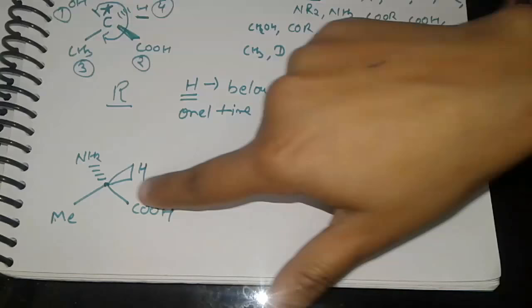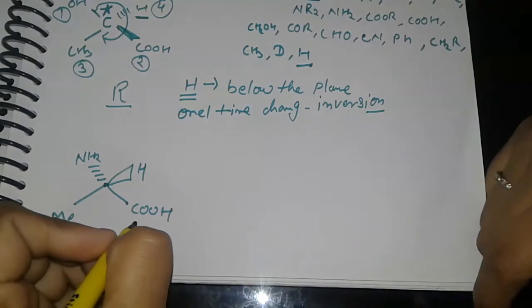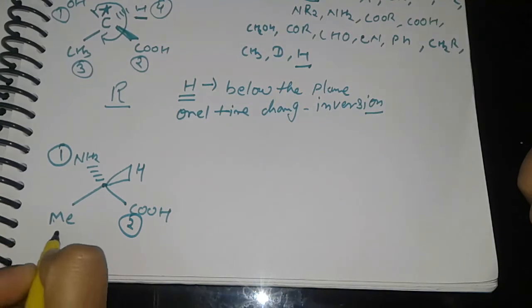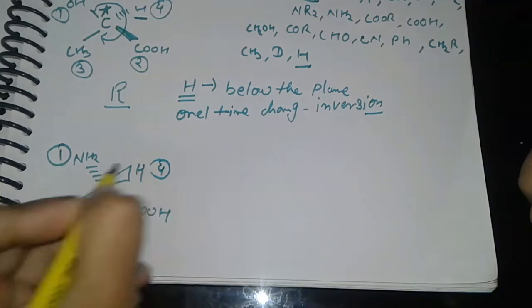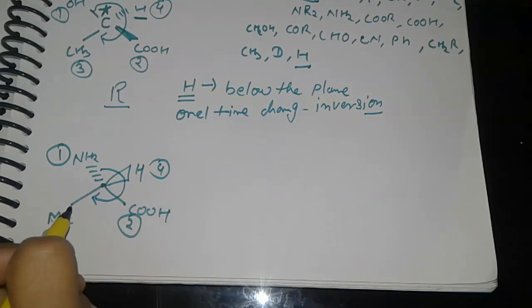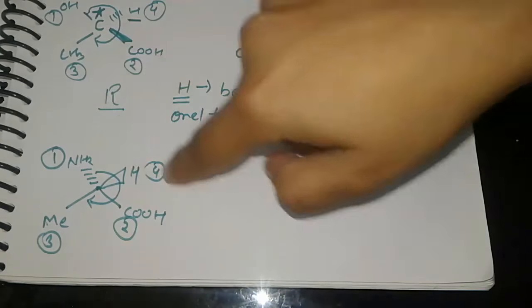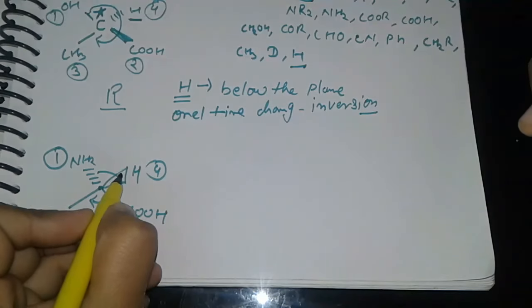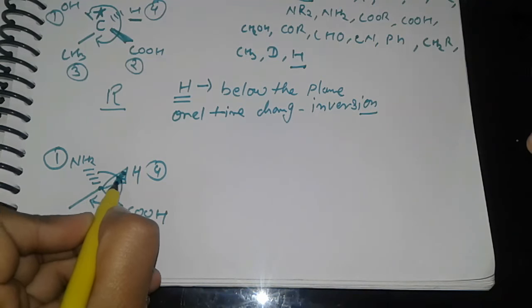Now in the second example, if we give priority, the first priority will be amino group: one, two, three, and four. Look at the rotation: one, two, three.